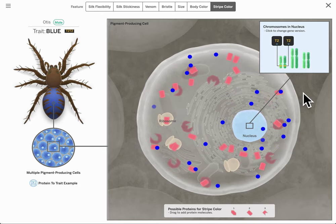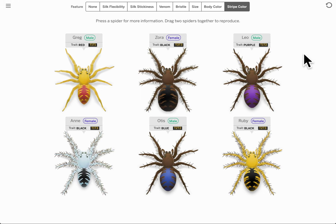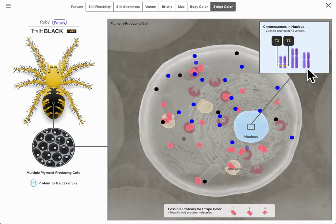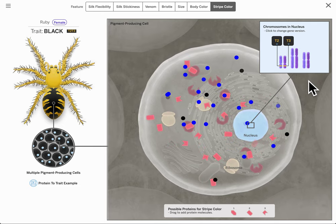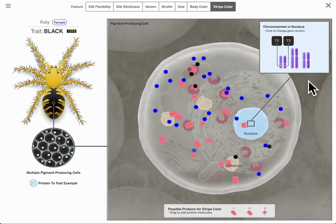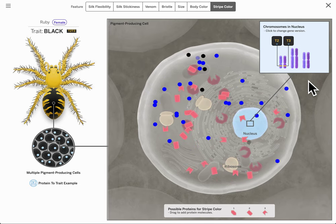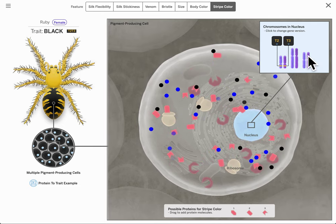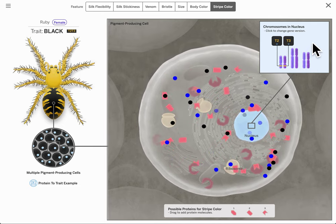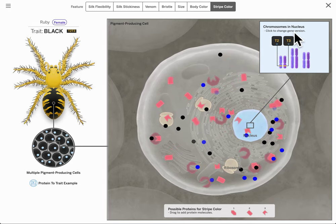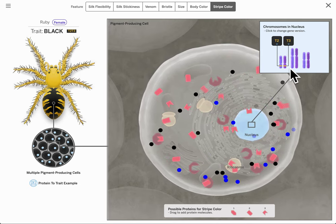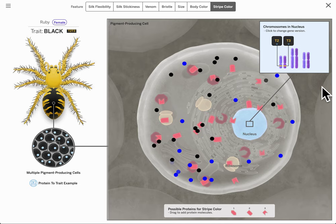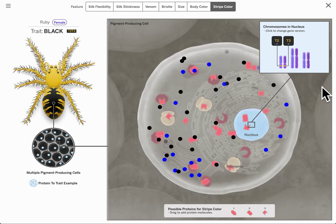If we look at Ruby, you'll notice that she also has chromosomes and she has them for stripe color, but her copies aren't the same. She has two different versions, a T2 and T3. Different versions of a gene also are called alleles. So we have chromosomes, chromosomes have genes, and then each version of a gene is called an allele.